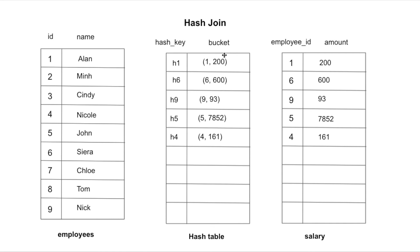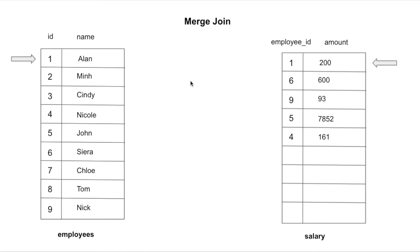Hash join is a simple algorithm but requires extra memory. When Postgres does not have enough memory, it will decide to choose a different join algorithm. The last join algorithm I want to mention is merge join, which works slightly differently. The easiest way to explain it is to look at the arrows or markers pointing to the top rows of the two tables.